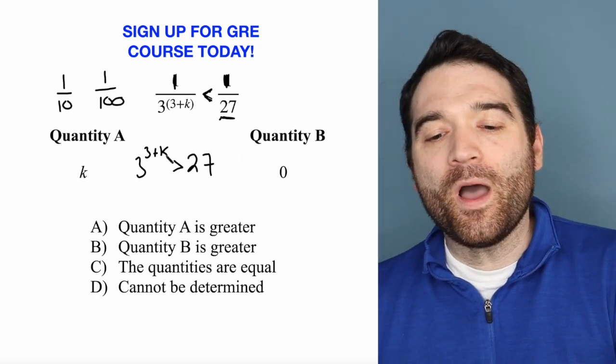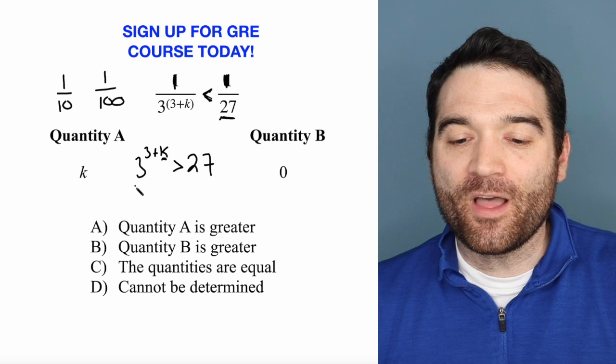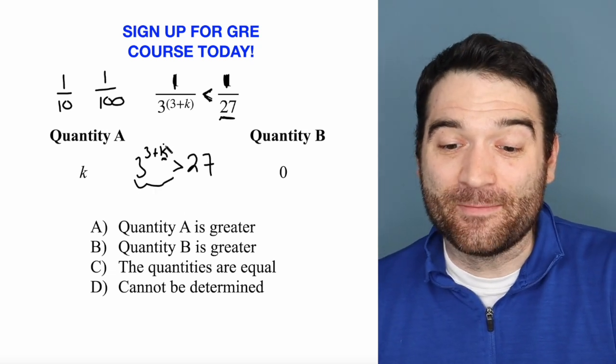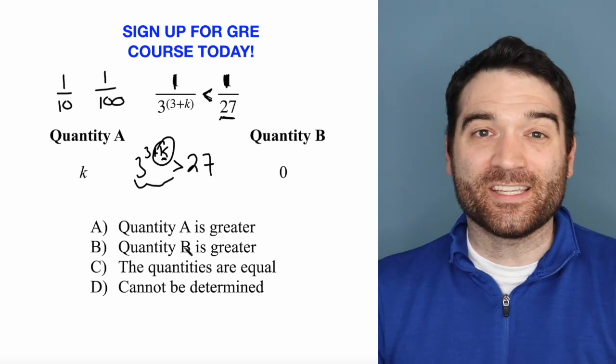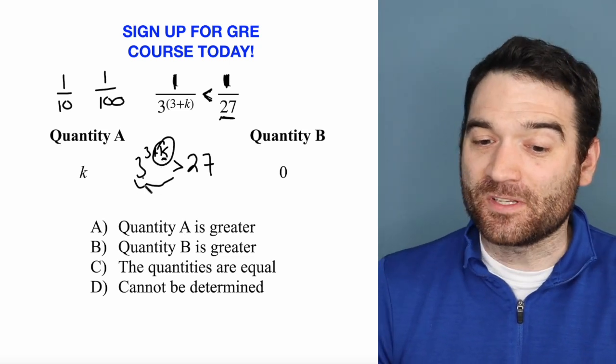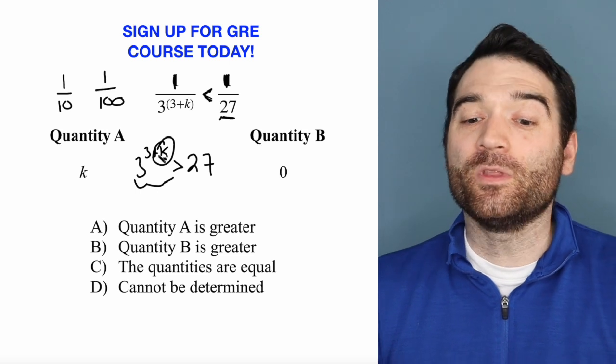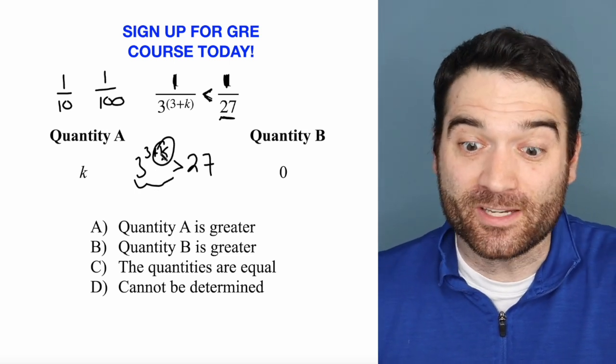Well, what needs to be true about k? If I want this number to be bigger than 27, I need to make k bigger than 0. Because when k is equal to 0, this side equals 27, and it's not greater. The only way to make it greater is to make k bigger than 0.